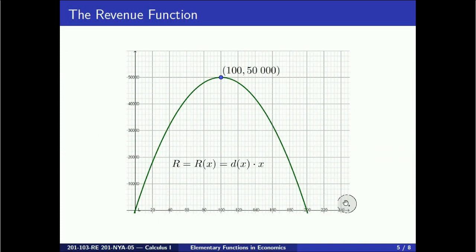On this graph, we illustrate the revenue function given by 1000x minus 5x squared. Its graph is that of a concave down parabola, and its vertex is reached when x equals 100. This indicates what production should be set to in order to maximize revenues.